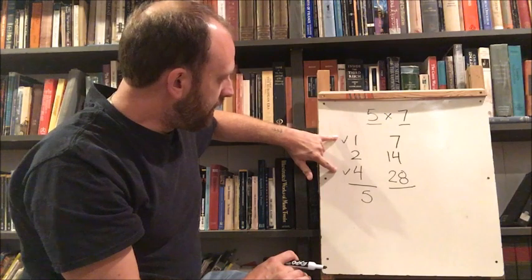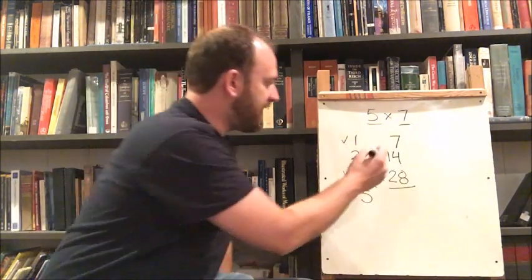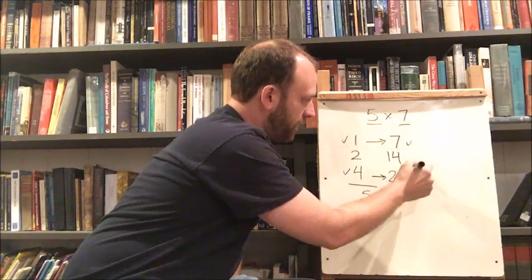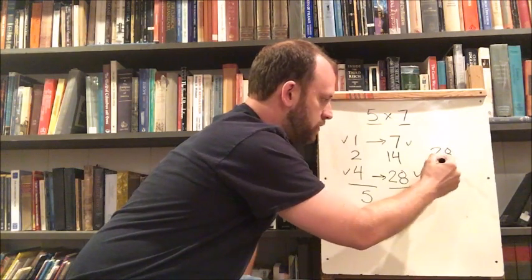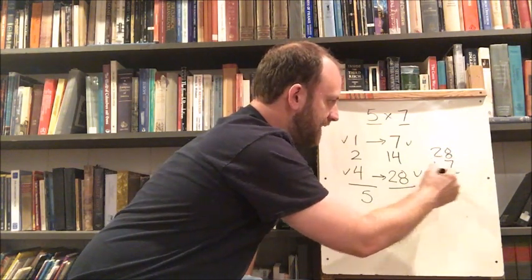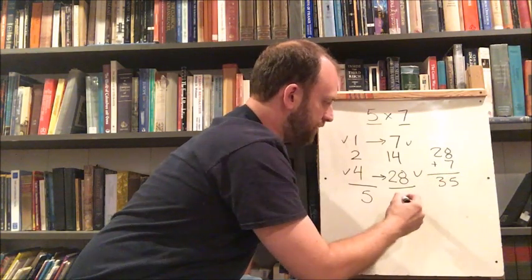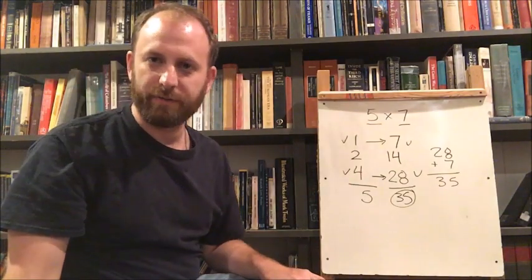Okay, now the numbers over here that add up to five that we've checked, we're going to take the corresponding numbers in the right column. We're going to take those and add them together. 28 plus seven. And of course 28 plus seven equals 35. And that's the answer to five times seven is 35.